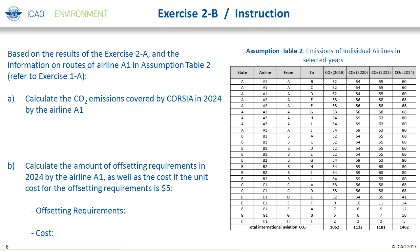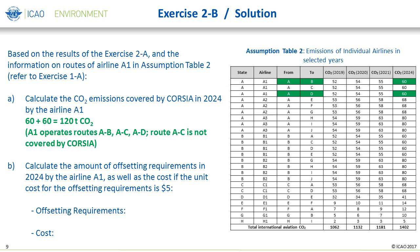Based on the results of the first part of this illustrative exercise and the information on routes of aircraft operator A1 in Assumption Table 2, you are asked to calculate three values: first, the emissions covered by CORSIA in 2024 by aircraft operator A1; second, the amount of offsetting requirements in 2024 by aircraft operator A1; and third, the total offsetting cost if the emissions unit cost is five dollars. Remember, only the CO2 emissions from routes covered by CORSIA are taken into account when calculating the offsetting requirements for an aircraft operator. The CO2 emissions covered by CORSIA in 2024 by aircraft operator A1 is 120 tons of CO2.